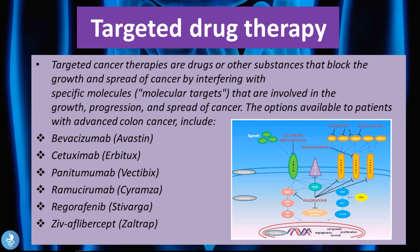Targeted drug therapies block the growth and spread of cancer by interfering with specific molecular targets involved in growth, progression, and spread. Options for advanced colon cancer include bevacizumab, cetuximab, panitumumab, ramucirumab, regorafenib, and ziv-aflibercept. These drugs interfere with different signaling pathways, targeting specific molecules responsible for cell growth, angiogenesis, proliferation, and survival of cancer cells, thereby preventing cancer progression.